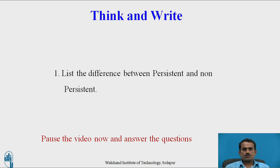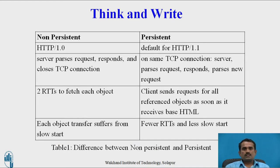Now let's see the answer. In non-persistent, HTTP 1.0 version is used. In persistent, HTTP 1.1 version is used by default. Second, in non-persistent, the server parses the request and response and closes the TCP connection. In persistent, on the same TCP connection, the server parses request and response, then parses the new request. Third, in non-persistent, two RTTs are needed to fetch each object. In persistent, the client sends requests for all referenced objects as soon as it receives the base HTML, and each object suffers from slow start, while persistent favors fewer RTTs and less slow start.